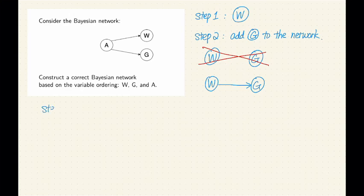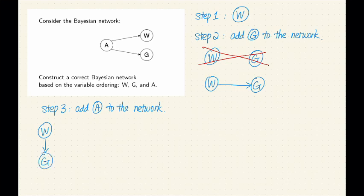Step three: let's add A to the network. We already have W and G. When adding A, we can first think about whether we can add it with no parent. If we want to add A with no parent, we need to verify whether A is independent from G and whether A is independent from W. If both are true, then we can add A with no parent. Is this the case? Of course not. In our original network, A and W are connected, so they're not independent. A and G are also connected, so they're not independent either. Which means we cannot add A with no parents.